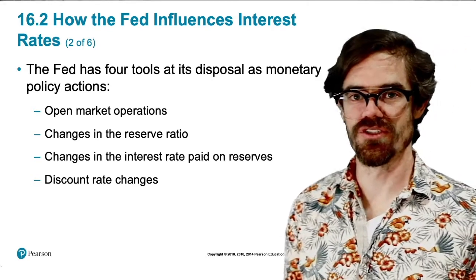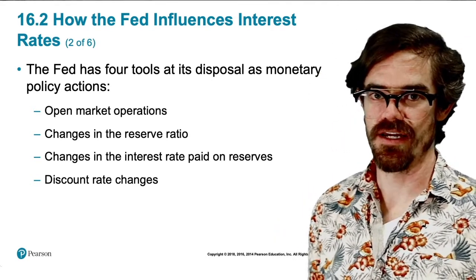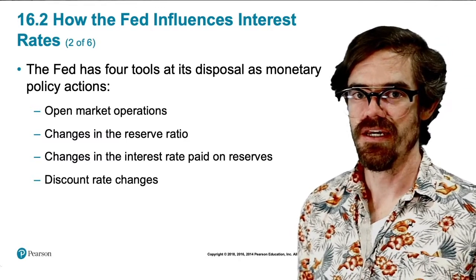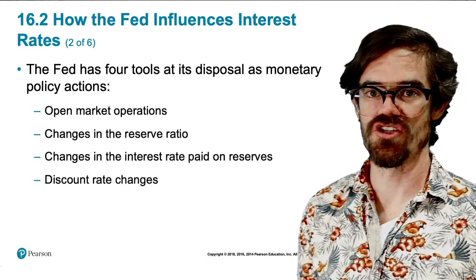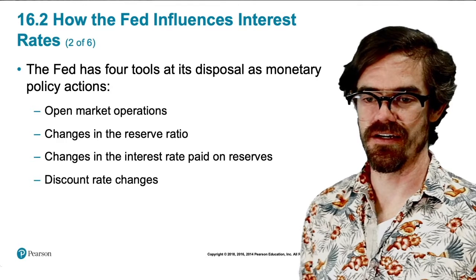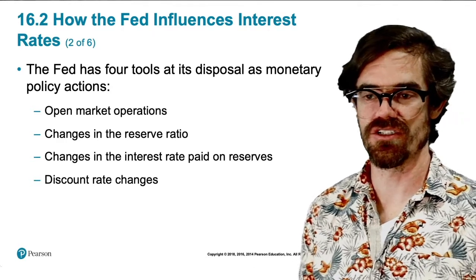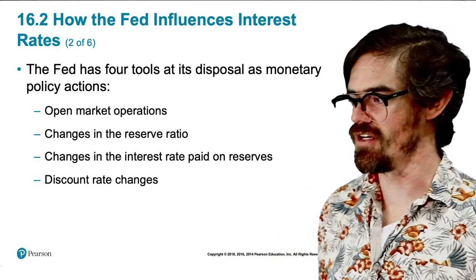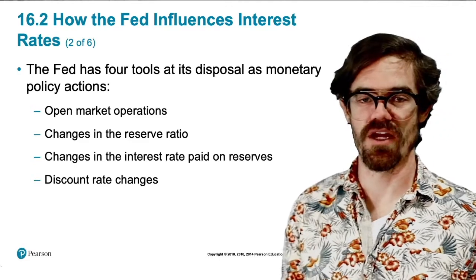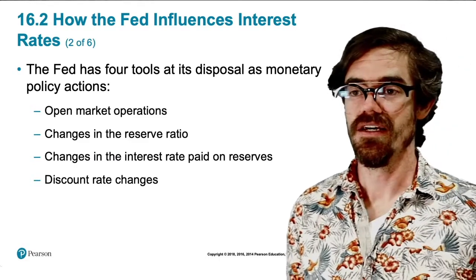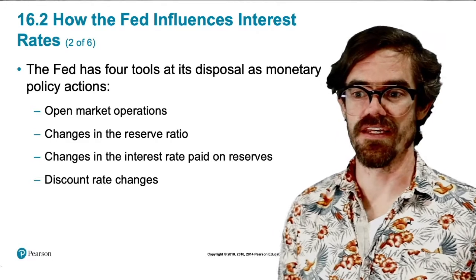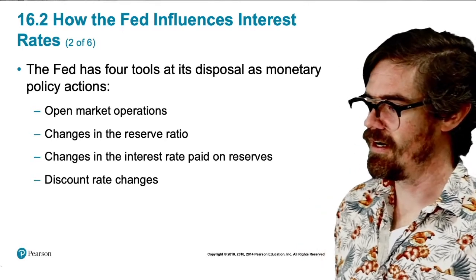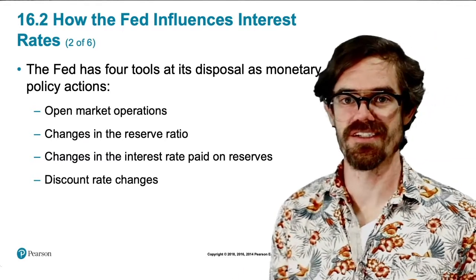It can also change the reserve ratio, which we learned about in the last chapter — the fractional reserve banking system and how the required reserve ratio can change how the central bank's policy actions affect the money supply. So that's one way it can affect the money supply. It can also change the interest rate paid on reserves, which is the interest rate that it gives banks when banks deposit money with the Federal Reserve.